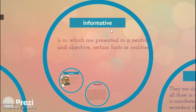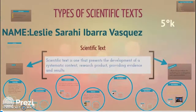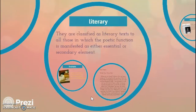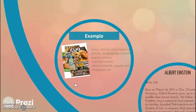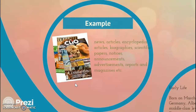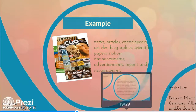Informative texts are those in which certain facts or realities are presented in a neutral and objective way. Here's the example: news, articles, encyclopedia articles, biographies, scientific papers, notices, announcements, advertisements, reports, and magazines.